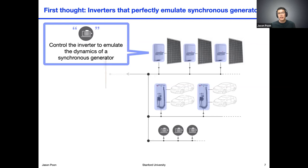From that perspective, it may be better to take advantage of power electronics for what they're good at. And secondly, the electric grid was designed around properties of synchronous generators, but there's nothing really inherent about why that is the case. In fact, if we had the opportunity to design new operating principles for a grid designed around power electronics, it could potentially look completely different than how the grid conventionally worked when it was relying on synchronous generators.